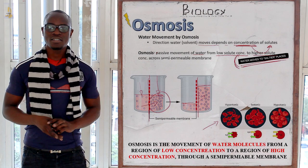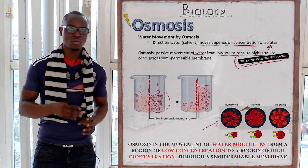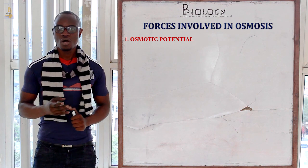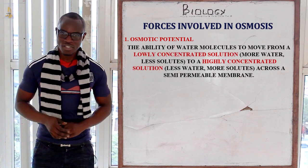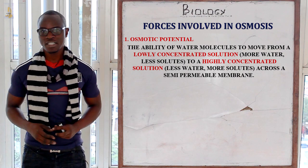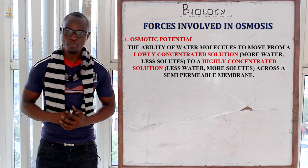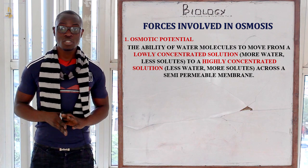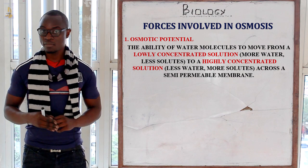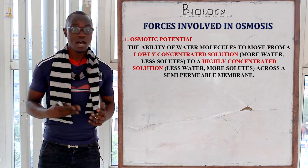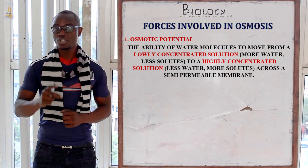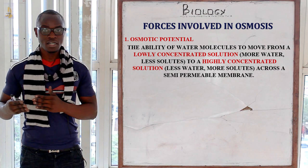Let's look at the forces that influence osmosis. The first force is osmotic potential. Osmotic potential is the ability of a solution to develop osmotic pressure when separated by a semi-permeable membrane. You should know that when a solution is not separated by a semi-permeable membrane, osmosis won't take place. However, the solution still has the potential to develop osmotic pressure.